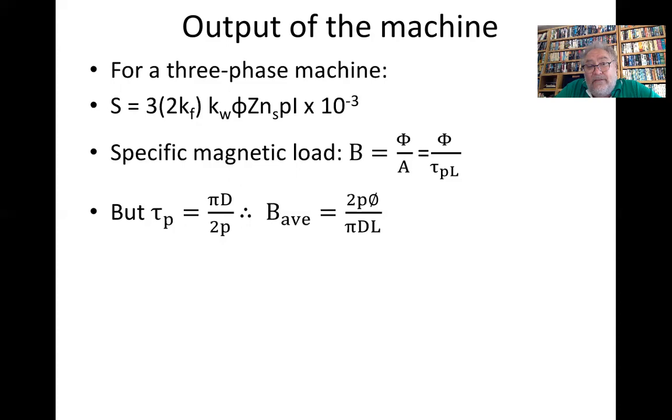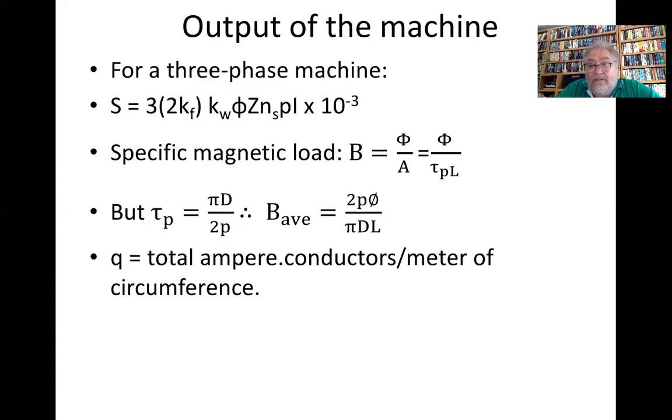And therefore the average flux density is 2pφ over πDL. Q is our total ampere conductors per meter of the circumference, and therefore Q is equal to 3IZ over πD.